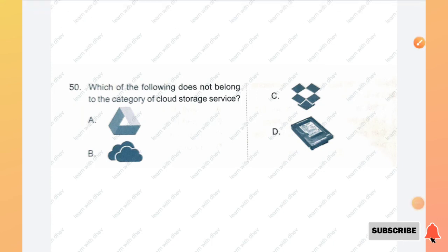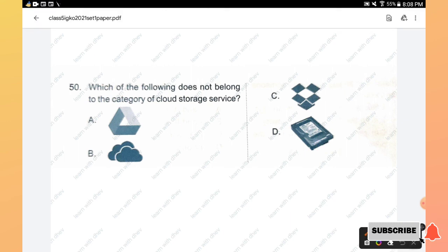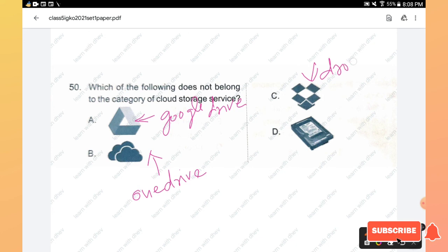Question number 50: Which of the following does not belong to the category of cloud storage service? Let's go to the options. Option A, this is a Google Drive symbol. Option B, this is also a cloud storage, it's a OneDrive cloud storage service. And option C, it's a Dropbox cloud storage service. Option D, yes it is a hard disk, it's a physical device. Hence option D is not a cloud storage service. Hope you all like this video. Thanks for watching.